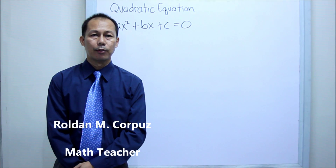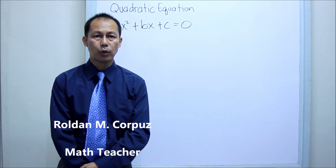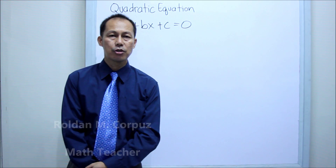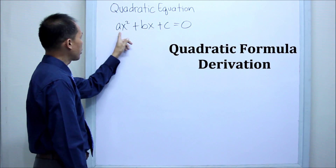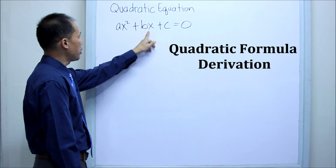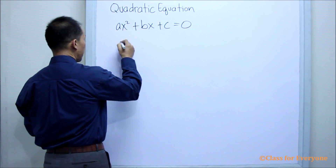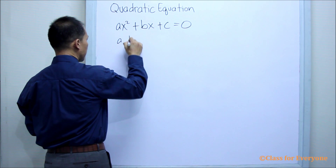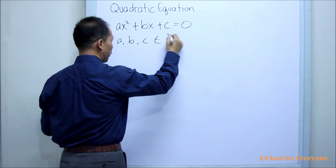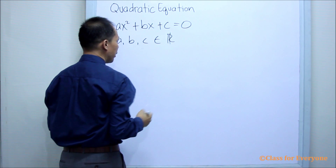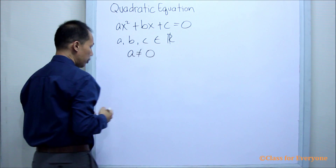Hi, welcome to class for everyone. I am Golden and Marcus. Our quadratic equation is written in the form AX squared plus BX plus C equals zero, wherein A, B, and C are elements of the real numbers, and A is not equal to zero.